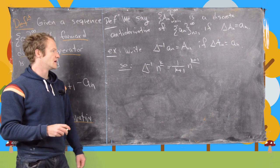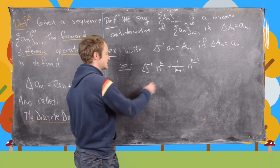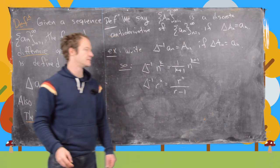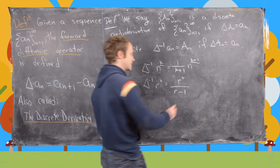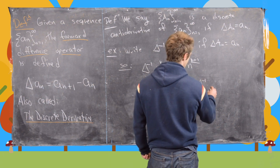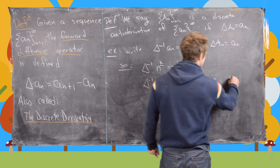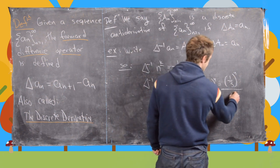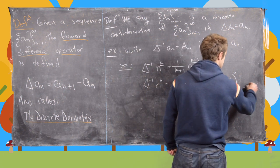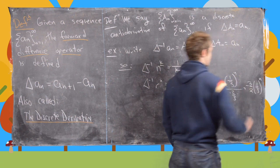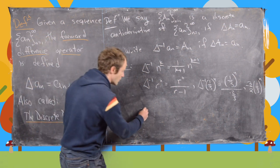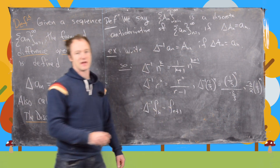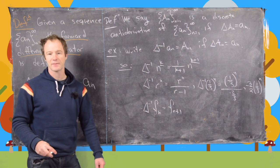From our earlier results: the discrete antiderivative of n to the kth falling power is 1/(k+1) times n to the (k+1)th falling power. The discrete antiderivative of r^n is r^n divided by (r-1). For example, the discrete antiderivative of (1/3)^n is (1/3)^n over (1/3 - 1), which simplifies to minus (3/2)·(1/3)^n. And the discrete antiderivative of Fibonacci numbers just shifts the index up one to F_{n+1}.